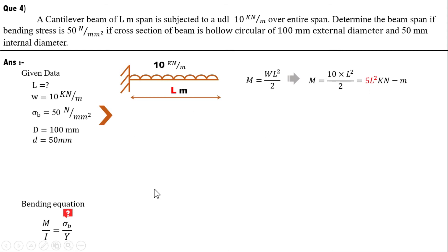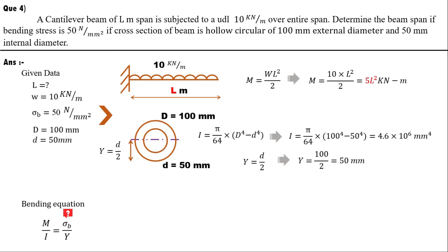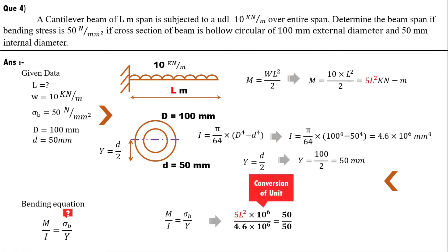For the hollow circular section, I = (π/64)×(D⁴ − d⁴). With D = 100 mm and d = 50 mm, I = 4.6 × 10⁶ mm⁴. With y = D/2 = 50 mm, converting 5L² kN·m by multiplying by 10⁶ and substituting into the bending equation, we get L = 0.95 m, approximately 0.959 m.